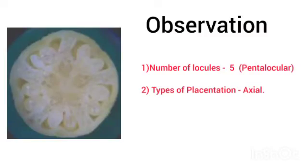Observation: Number of locules present in the transverse section of ovary is 5, that is pentalocular. And the type of placentation is axial.